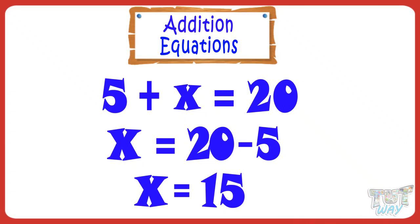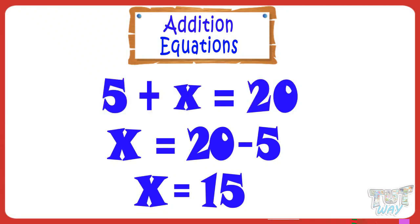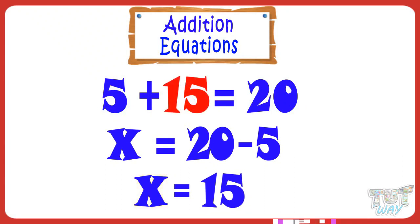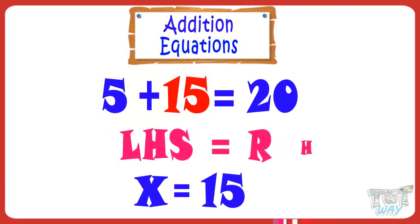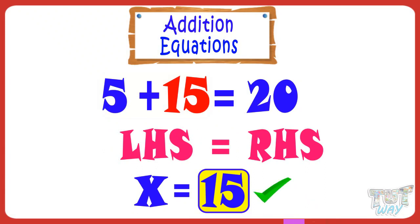Now you can cross-check your answer too, by putting the value of X in the original equation. Our original equation is 5 plus X equals 20. Putting the value of X we just found — 15 — we get 5 plus 15 equals 20. Check: 5 plus 15 equals 20, so LHS equals RHS. Hence, we proved the value of X we found is correct.